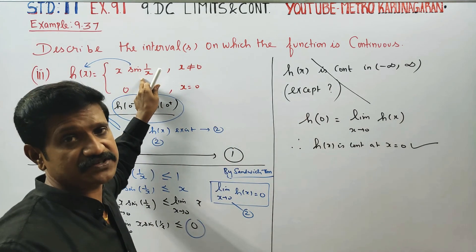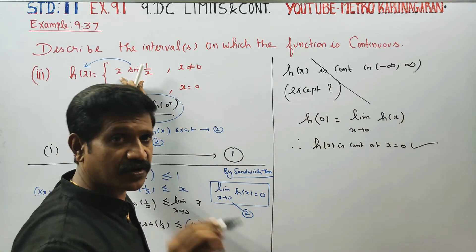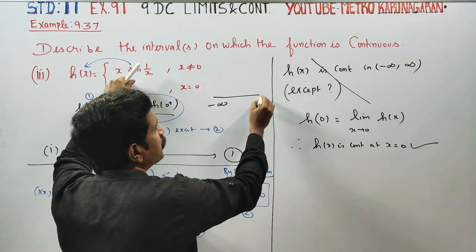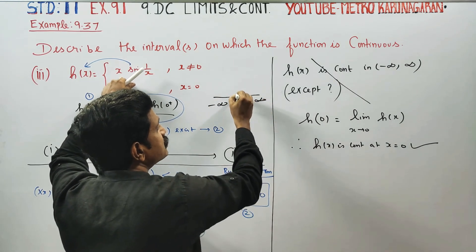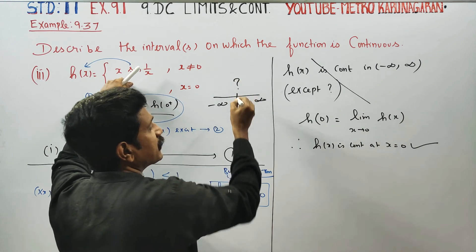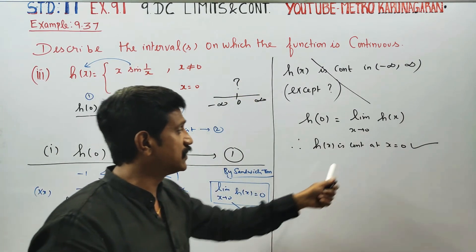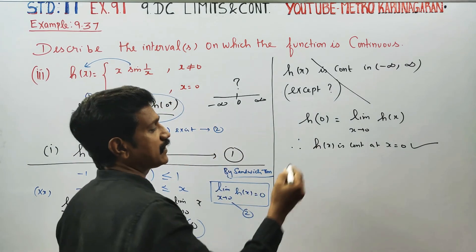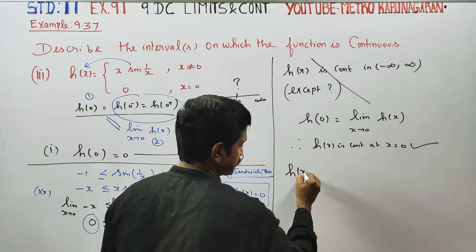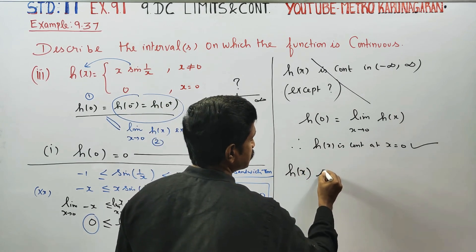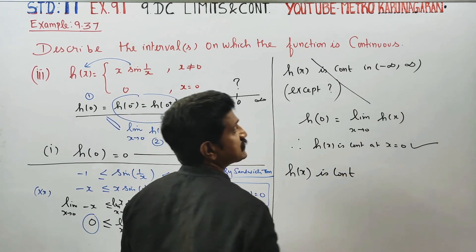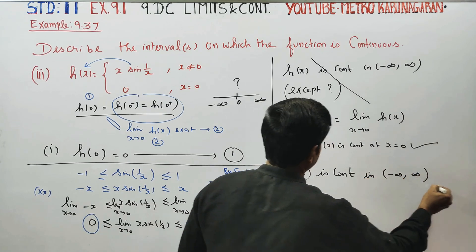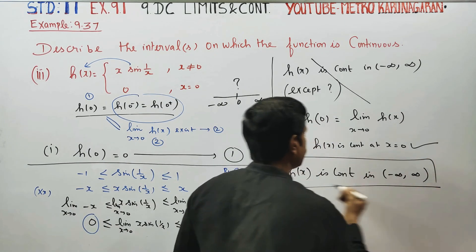This is a sine function — always continuous. This is an algebraic function — always continuous. On the real line, from minus infinity to plus infinity, there is no problem, except possibly at 0. But we have shown x=0 is also continuous. So h(x) is continuous on (minus infinity, plus infinity).